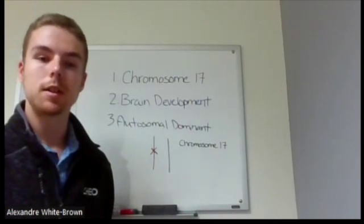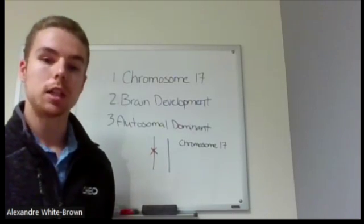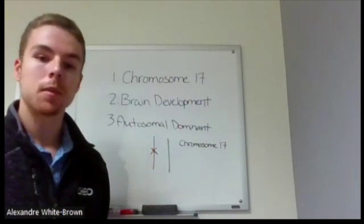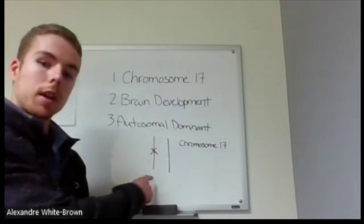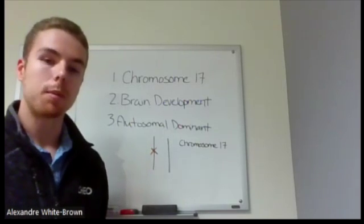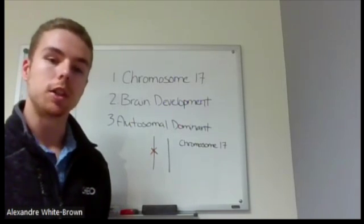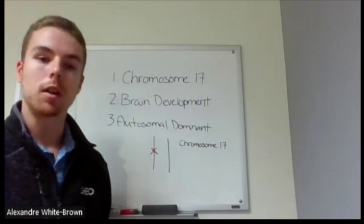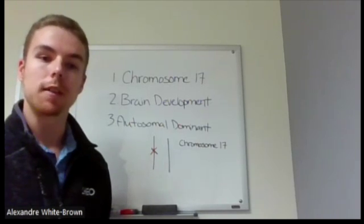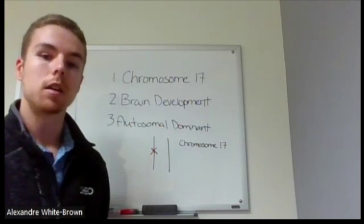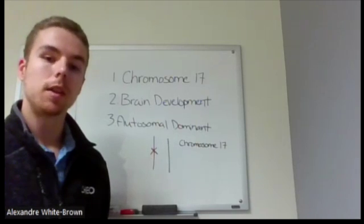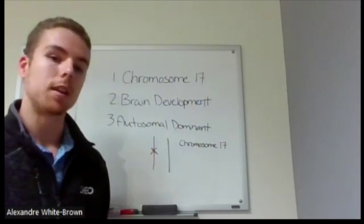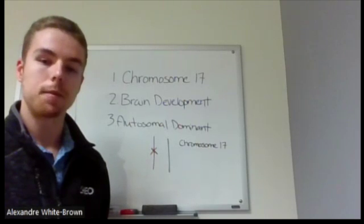As you can see from this diagram, only one copy of the DLG4 gene needs to have a pathogenic, or disease-causing, variant or mutation to cause Schein syndrome. The other copy of the gene is often unaffected and doesn't have a change on it.